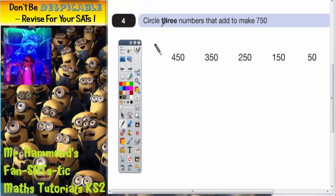Question 4. Circle 3 numbers that add to make 750. So we're going to pick any 3 of these numbers.